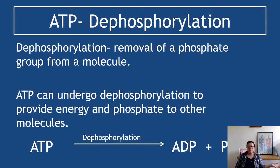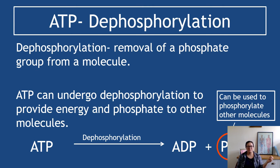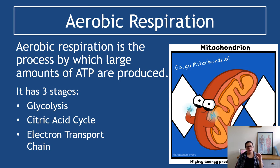Dephosphorylation is the opposite — that's removal of a phosphate group from a molecule. ATP can undergo dephosphorylation to provide energy and the phosphate to another molecule. So if another molecule needed a phosphate, ATP could drop one and give it over, releasing a burst of energy. The other molecule gains the phosphate and everybody is happy. Remember, the 'i' is always next to the P — we never say P alone. That phosphate can be used to phosphorylate other molecules. That's the basic idea around ATP that we need, because we're going to build on it when we look at glycolysis, the citric acid cycle, and the electron transport chain.